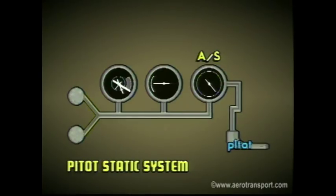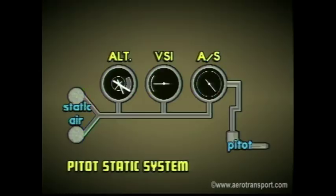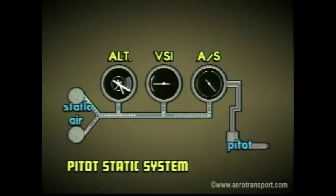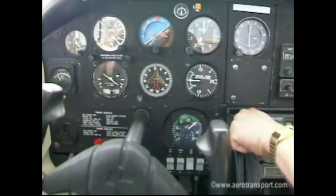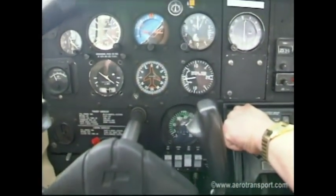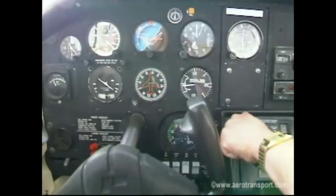The airspeed indicator is also connected to the static pressure tube, as are the altimeter and vertical speed indicator. The static pressure tube allows atmospheric pressure to equalize during changes in altitude. There are usually two vents on opposite sides of the fuselage where they will not be affected by turbulence or ram air pressures. Having two vents also compensates for errors which might develop from a steep turn or erratic changes in altitude.